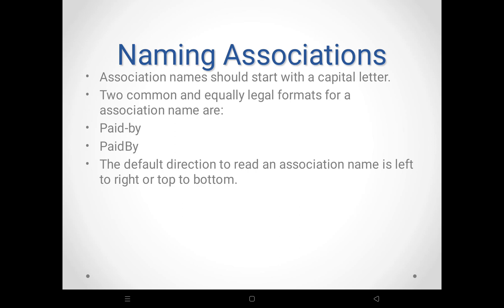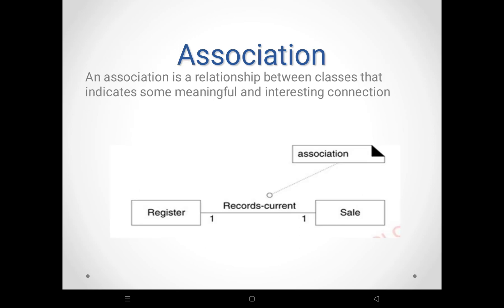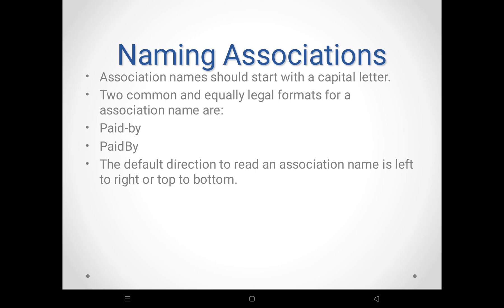There are two common legal formats for association names. You can use either 'Paid-By' — where two words are separated by a hyphen — or if the association name consists of more than one word, every word should start with the uppercase letter. The third naming convention: the default direction to read the association is left to right or top to bottom. For example, Register records current sale — reading left to right.